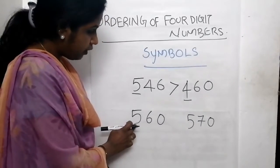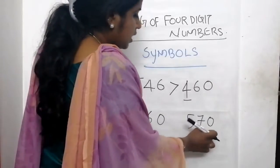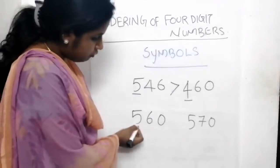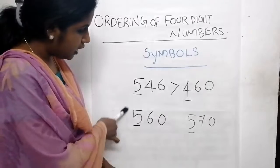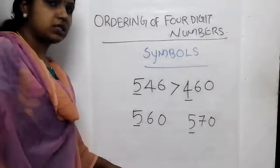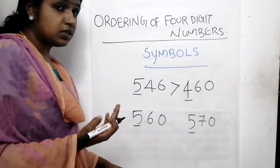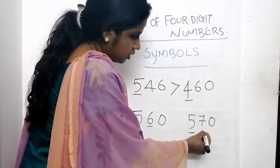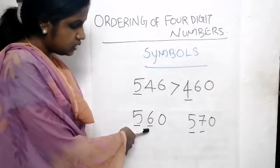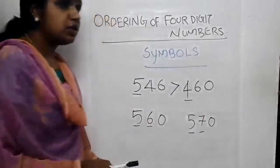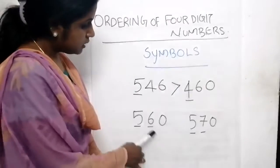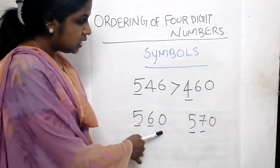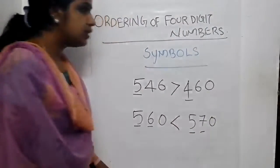Look at the next numbers: 560 and 570. We have to find which number is smaller and which one is larger. We look at the first digit - here it is 5 and here it is also 5, so we cannot say which one is larger. We move to the next place, tens place - here it is 6 and here it is 7. We know 6 is smaller than 7, so we write 560 is less than 570.